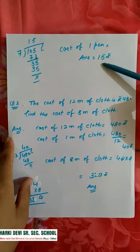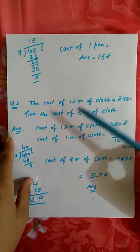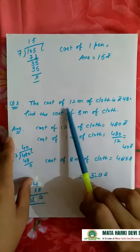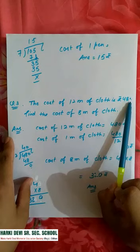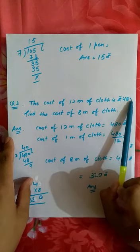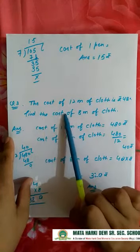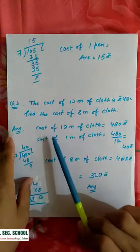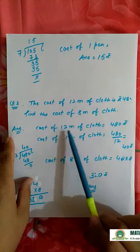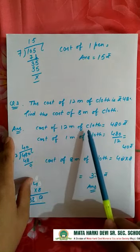The next example is: the cost of 12 meter of cloth is 480 rupees, find the cost of 8 meter of cloth. So statement is: cost of 12 meter of cloth is 480 rupees, then the cost of one meter of cloth equals...